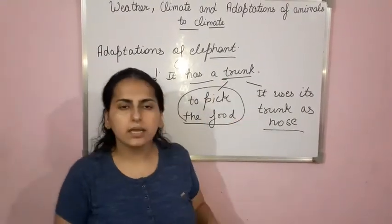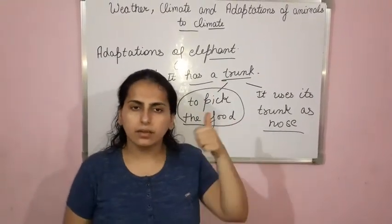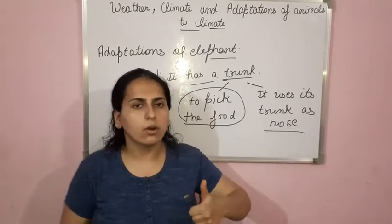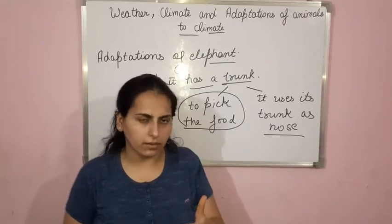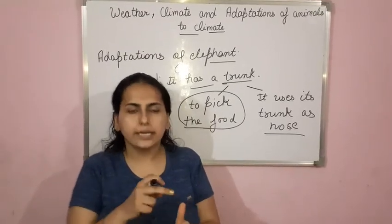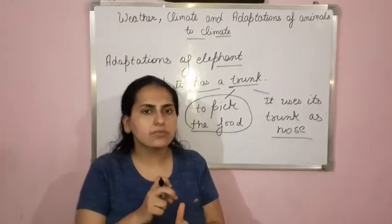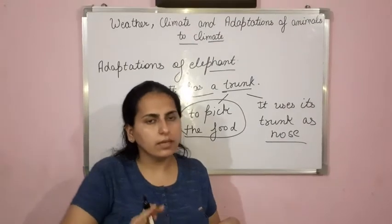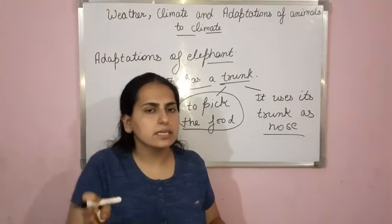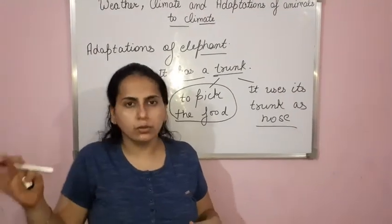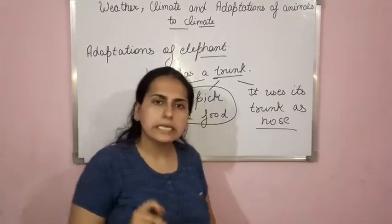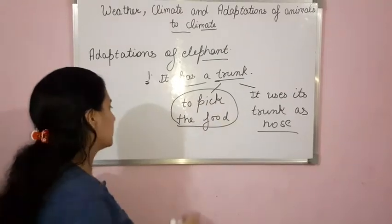So this is the first adaptation: presence of trunk. It uses its trunk to pick the food as well as as a nose. Now, the second adaptation.